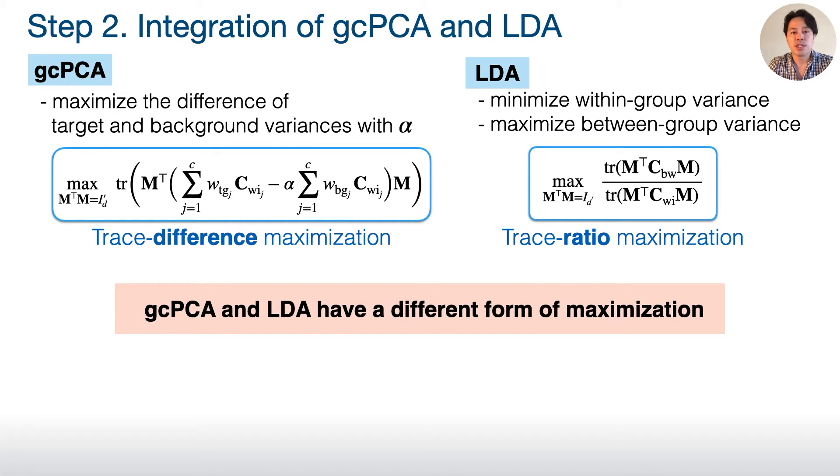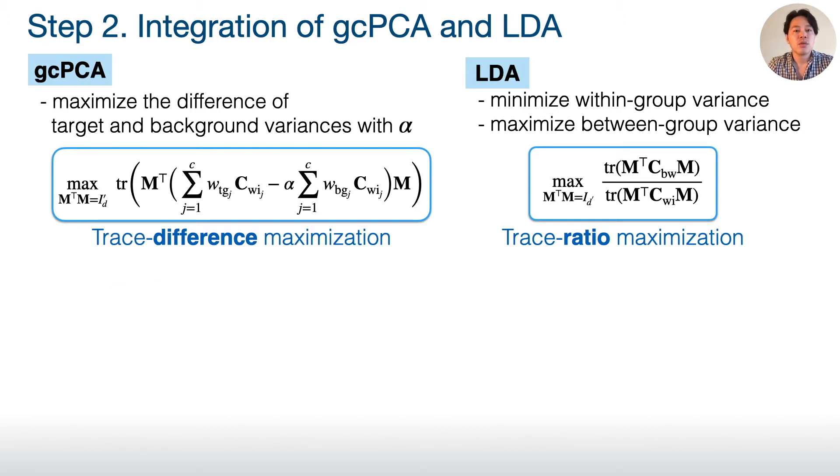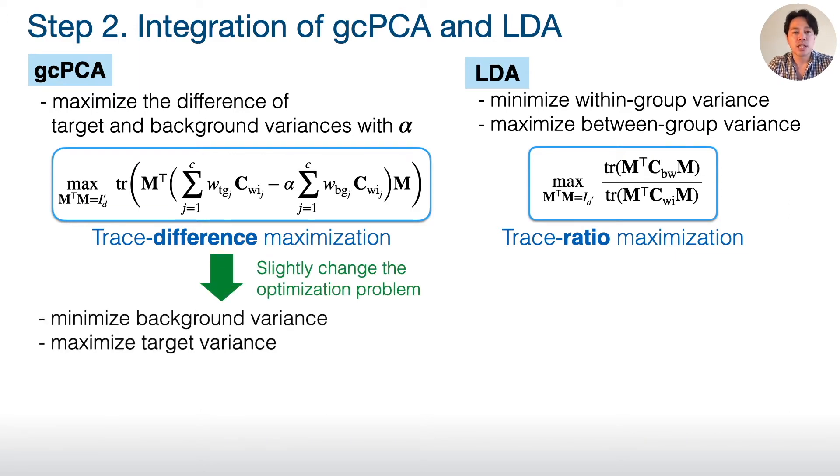Because generalized CPCA and LDA have a different form of optimization, it's difficult to unify them as they are. But we can slightly change the optimization problem. Generalized CPCA can be changed to the optimization of minimizing background variance and maximizing target variance at the same time.